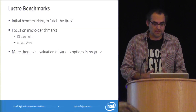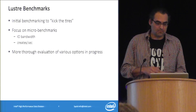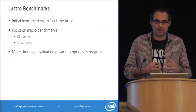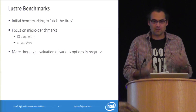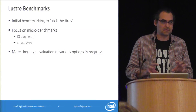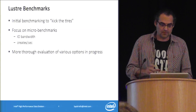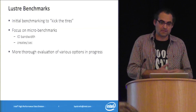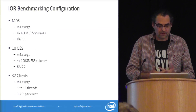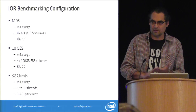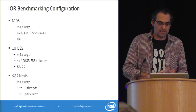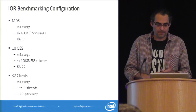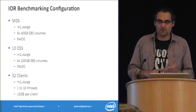The benchmarking done is an initial phase to kick the tires, focusing on standard sequential I/O and metadata operations (creates per second). A more thorough evaluation is in progress by more patient engineers who will do a detailed analysis of various Amazon resources and their cost-performance tradeoffs. The basic server configuration uses M1XLarge instance types — the cheapest instance with the full gigabit EBS-optimized option — with four virtual CPUs and 15 GB of RAM. RAID 0 is used over EBS volumes in all cases.